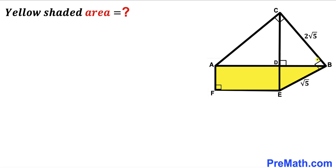Moreover, angle EBC is 90 degrees. Our task is to calculate the area of the yellow shaded region.